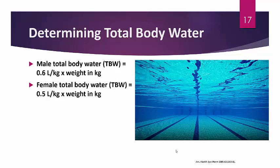Now let's apply these concepts with formulas. To determine total body water (TBW): for a male, TBW = 0.6 L/kg × weight in kg. For a female, TBW = 0.5 L/kg × weight in kg.